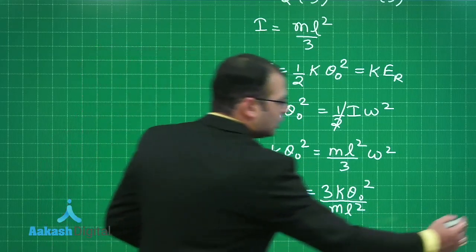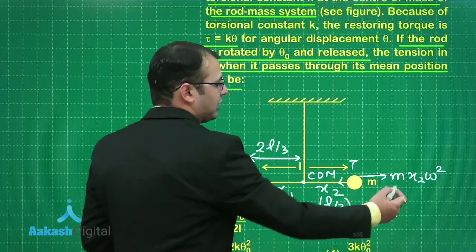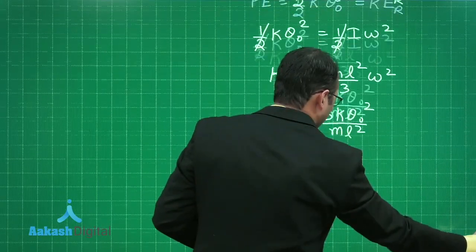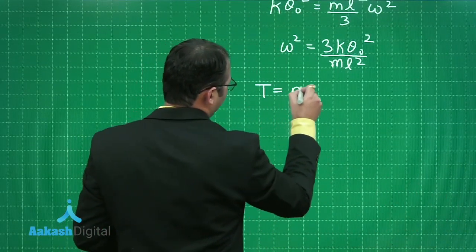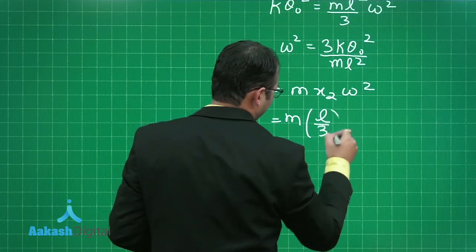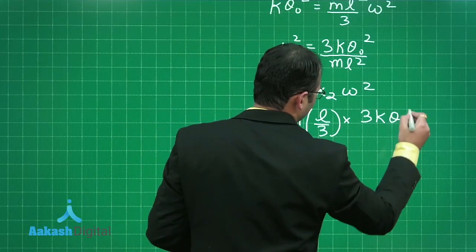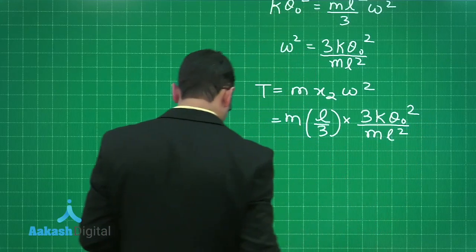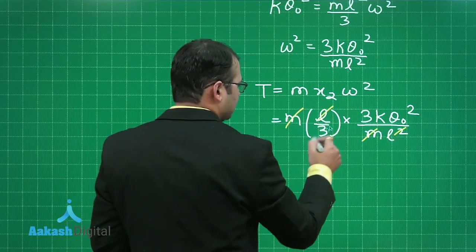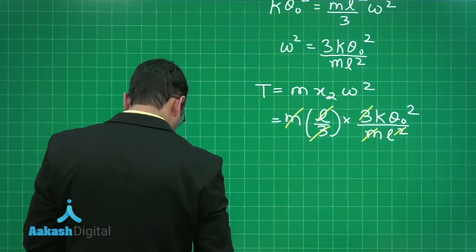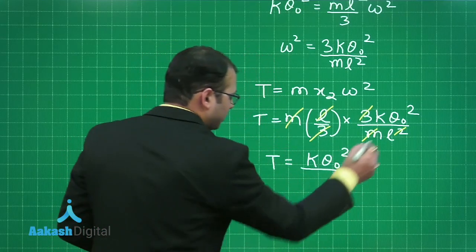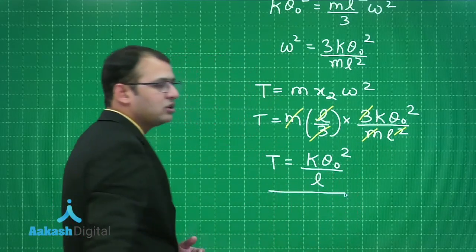So I have the omega square with me. As per our discussion, what is the tension acting is M X 2 omega square. We have X 2, we have omega. Let's put down the values here. So from here, I will say T is equals to M X 2 omega square. So it is M into L by 3 into 3 K theta naught square by M L square. You can see here that the mass and length can be cancelled down. This 3 and this 3 will be cancelled down. So what would be the tension's value? Tension would be K theta naught square upon what is remnant is L. This is the tension we can find.